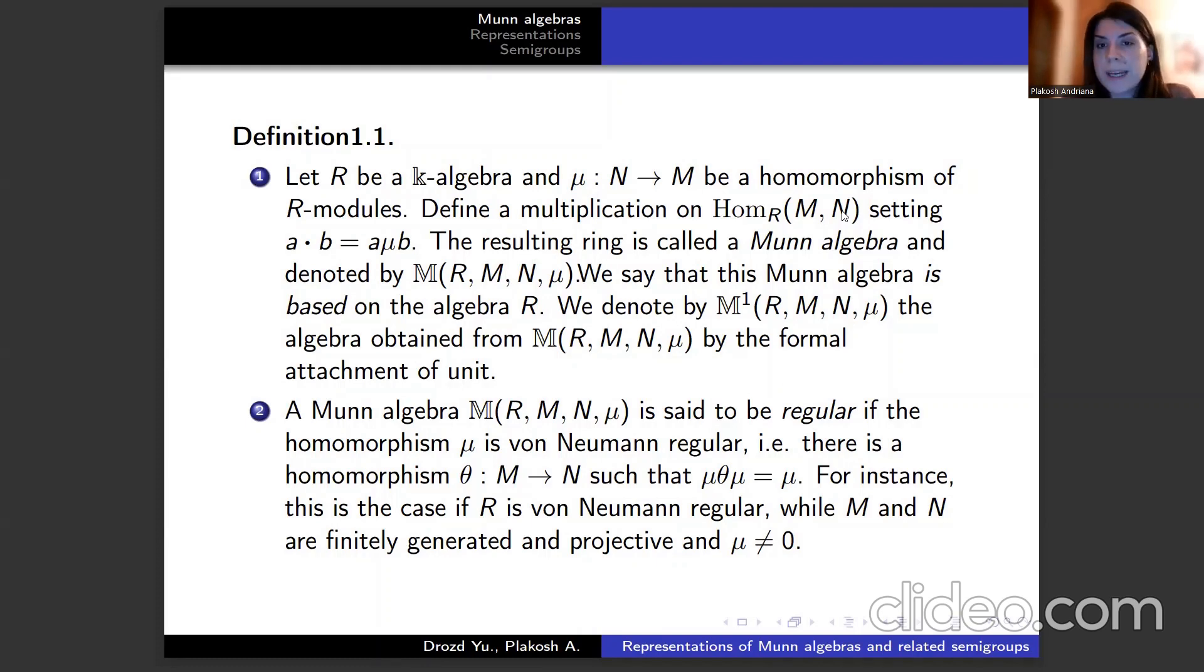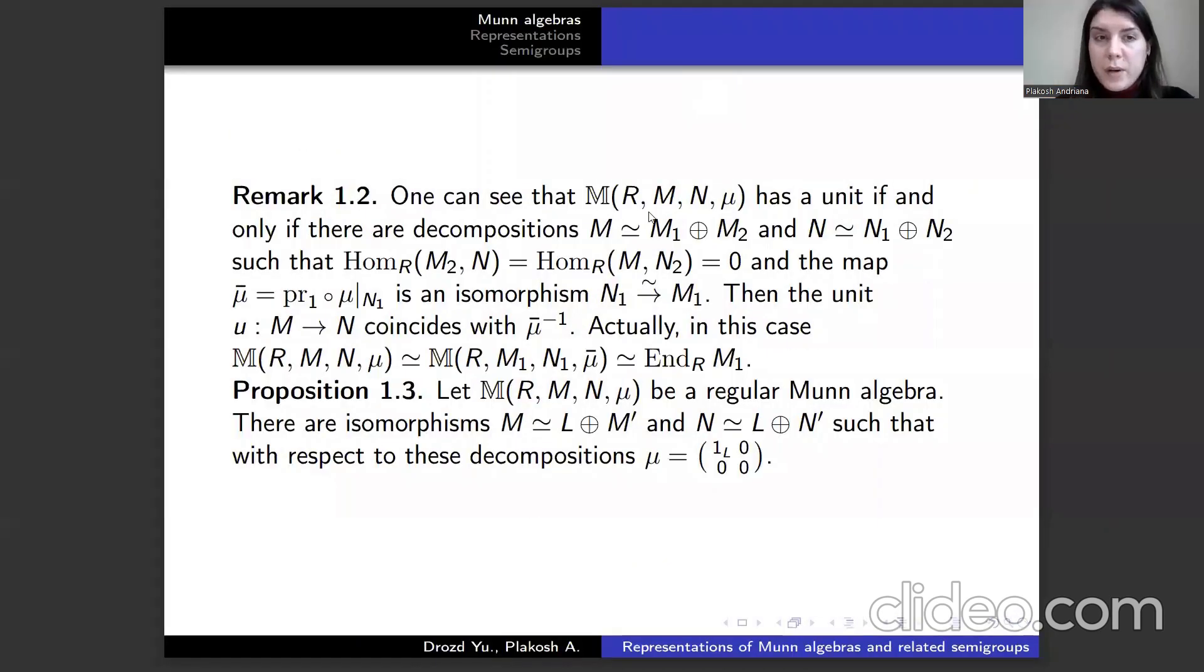We denote by M¹ the algebra obtained from M by the formal attachment of unit. A Munn algebra M is said to be regular if the homomorphism μ is von Neumann regular, meaning there is a homomorphism θ from M to N such that μ∘θ∘μ equals μ. For instance, this is the case if R is von Neumann regular while M and N are finitely generated and projective and μ ≠ 0.